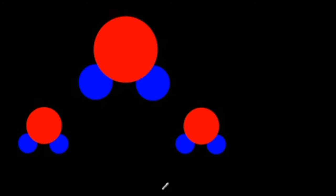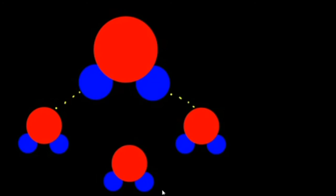To recap: water molecules can stick to each other — that's cohesion — caused by hydrogen bonding between the positive and negative sides of water molecules. And there's also adhesion, which is water being attracted to other things.